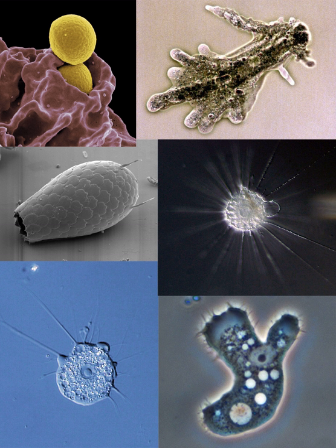Amoebas do not form a single taxonomic group; instead, they are found in every major lineage of eukaryotic organisms. Amoeboid cells occur not only among the protozoa, but also in fungi, algae, and animals. Microbiologists often use the terms amoeboid and amoeba interchangeably for any organism that exhibits amoeboid movement.